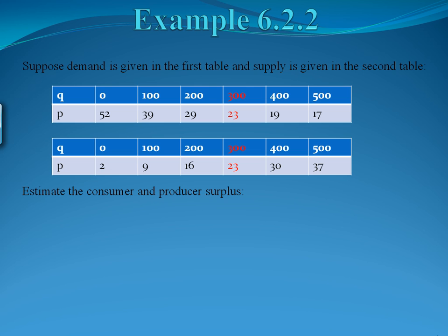For the next example, let's look at a table. Suppose the demand of some product is given in the first table listed here, and the supply is given in the second table. We want to estimate the consumer and producer surplus just based on these tables. The first thing we have to do is figure out where we're at equilibrium — that's when the quantity and price is the same for both the consumer and producer. Notice that highlighted in red, at the quantity of 300, the price is 23 for both the consumer and the producer. So this is our equilibrium point.